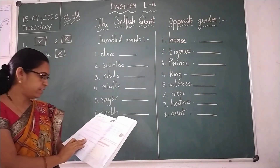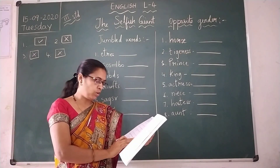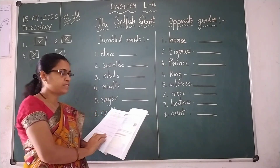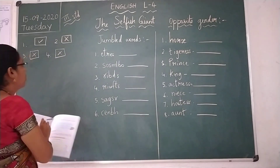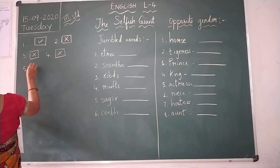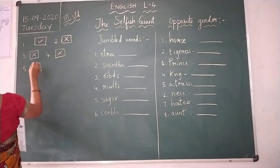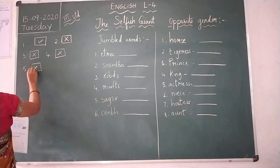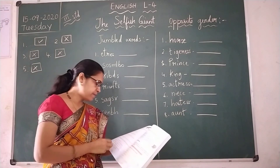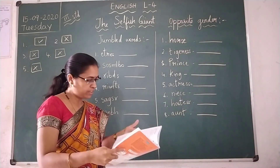Fifth one: After the children went away, it was always spring in the garden. This is also wrong. After the children went away, it was winter in his garden — it was not spring. So that is the correct answer. Move on to the next slide and just complete it.